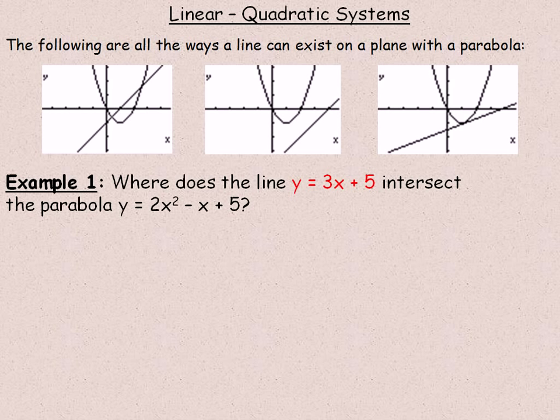We're going to take a look at three examples. The first one on this page asks: where does the line y = 3x + 5 intersect the parabola y = 2x² - x + 5? Points where the line and the curve share points that they have in common—if you take a look at this diagram on the left, that point there, for example...